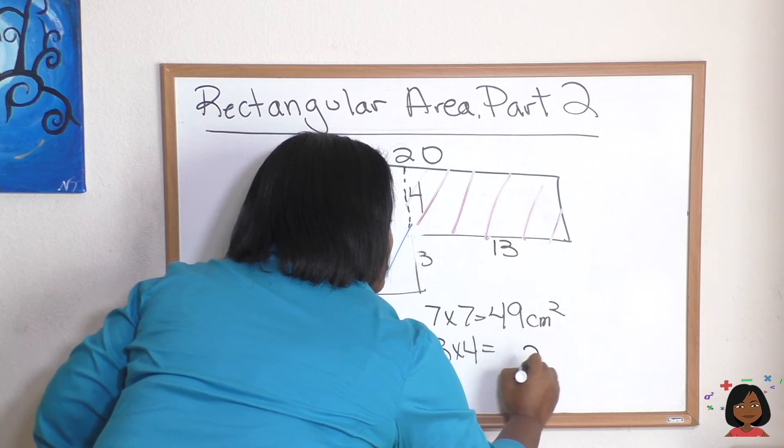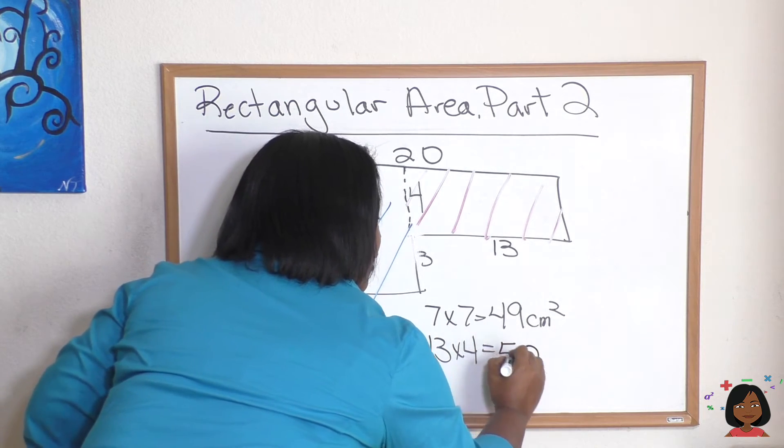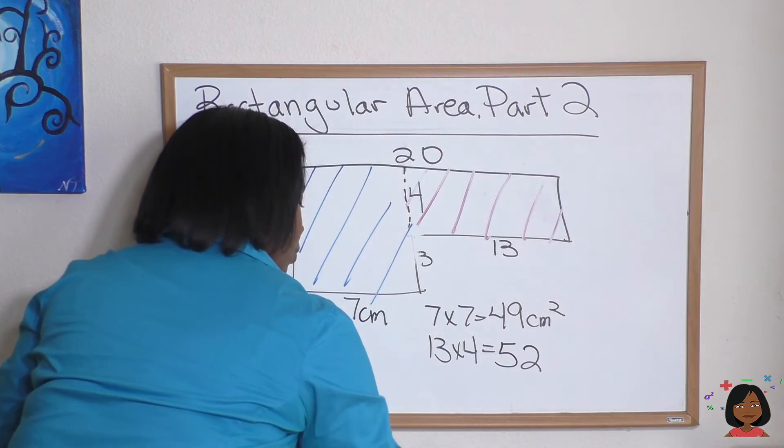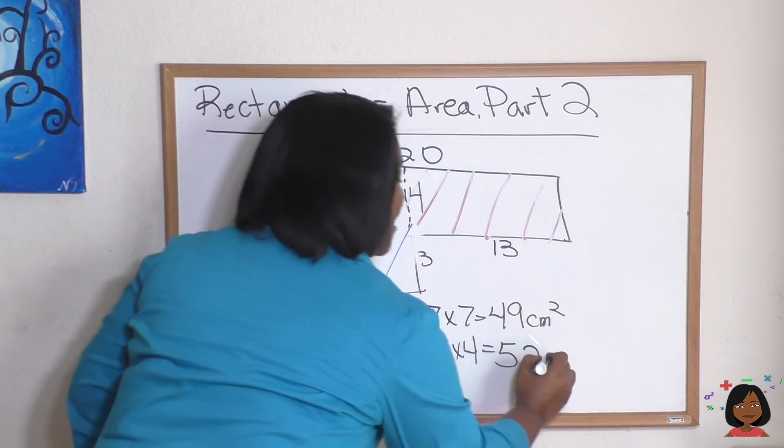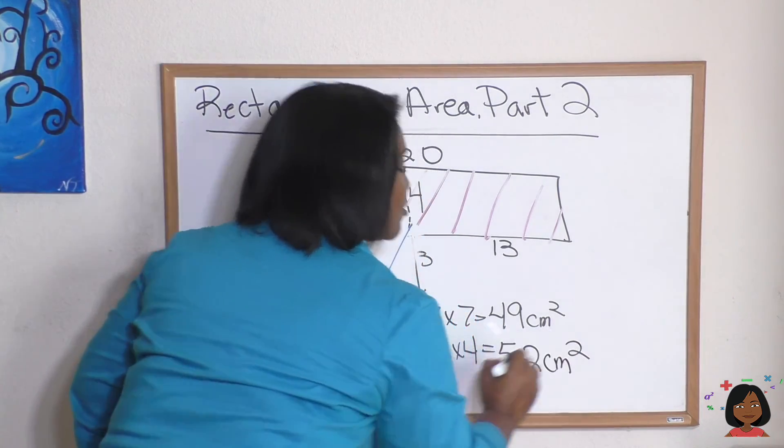Let's see, four times three is 12. And I think that's right. Let me do my quick math. Y'all didn't know I keep a calculator here just to make sure I don't make any mistakes. 52 centimeters squared.